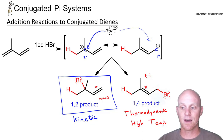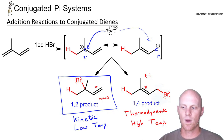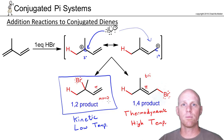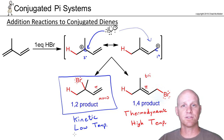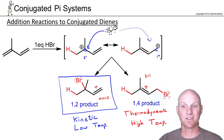Usually kinetic and thermodynamic products are two different products, though occasionally they'll be the same. The kinetic product is favored at low temperatures. If you have all the energy in the world — high temperatures — form the best, most stable product: the thermodynamic product. If you don't have much energy available — low temperatures — form the one with the lowest activation energy barrier, which is fastest: the kinetic product.